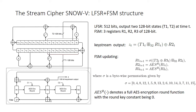For the targeted SNOWV, we only provide the description of internal state updating functions in the keystream generation phase. SNOWV uses the LFSR and FSM structure. The FSM consists of three registers. The keystream output and the FSM updating are as shown. Here, Sigma is a bytewise permutation, and AESR denotes a full AES encryption round function with the round constant being zero.